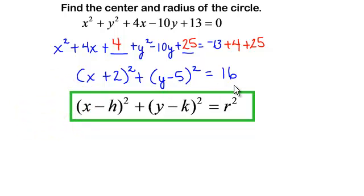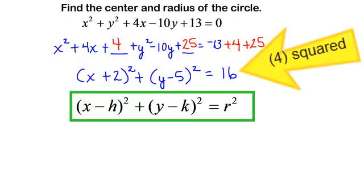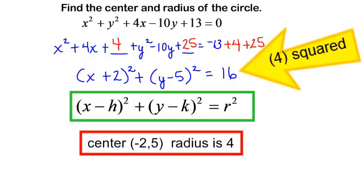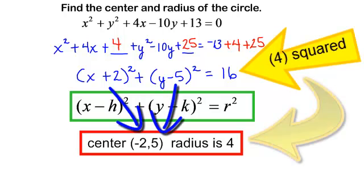If r squared is equal to 16, r must be 4. The center of this circle is negative 2, 5. The radius is 4. Let's try another one.